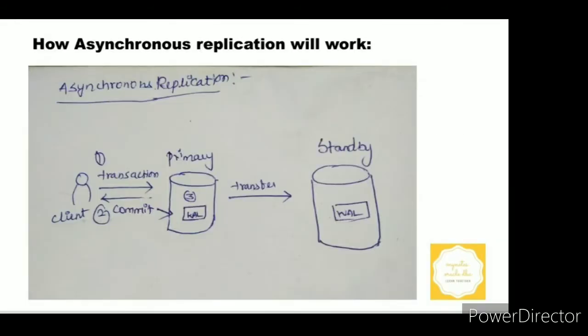How asynchronous replication will work: the user or client performing a transaction, at the end if they issue a commit, those changes of the data might hit that standby after the transaction has been committed on the primary server, which means those changes of the data first applied on the primary server, then it would be replicated into standby server.